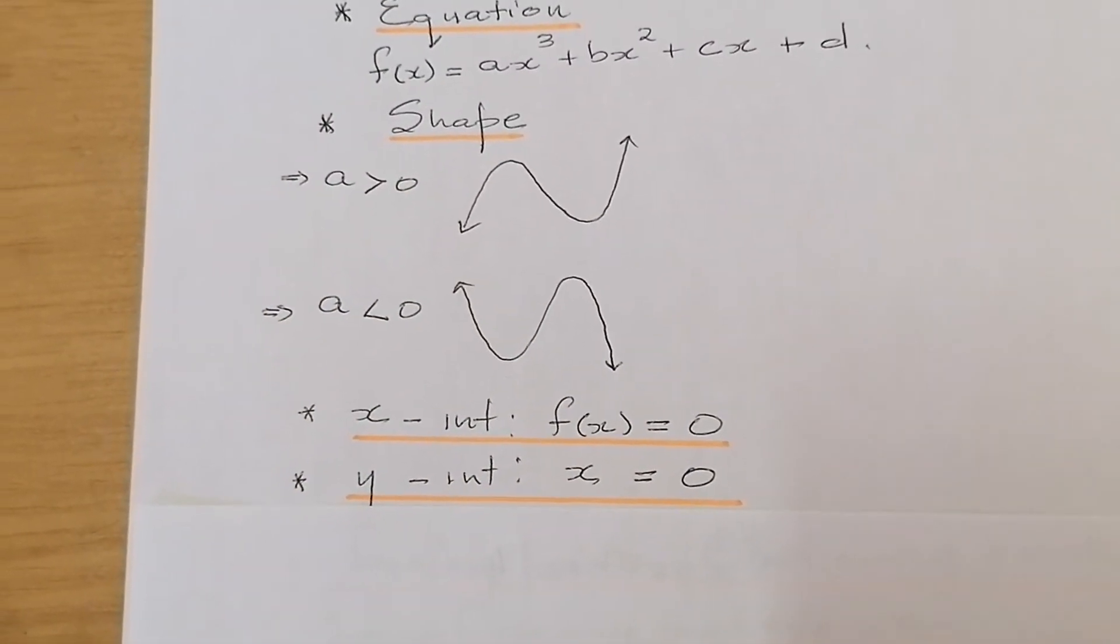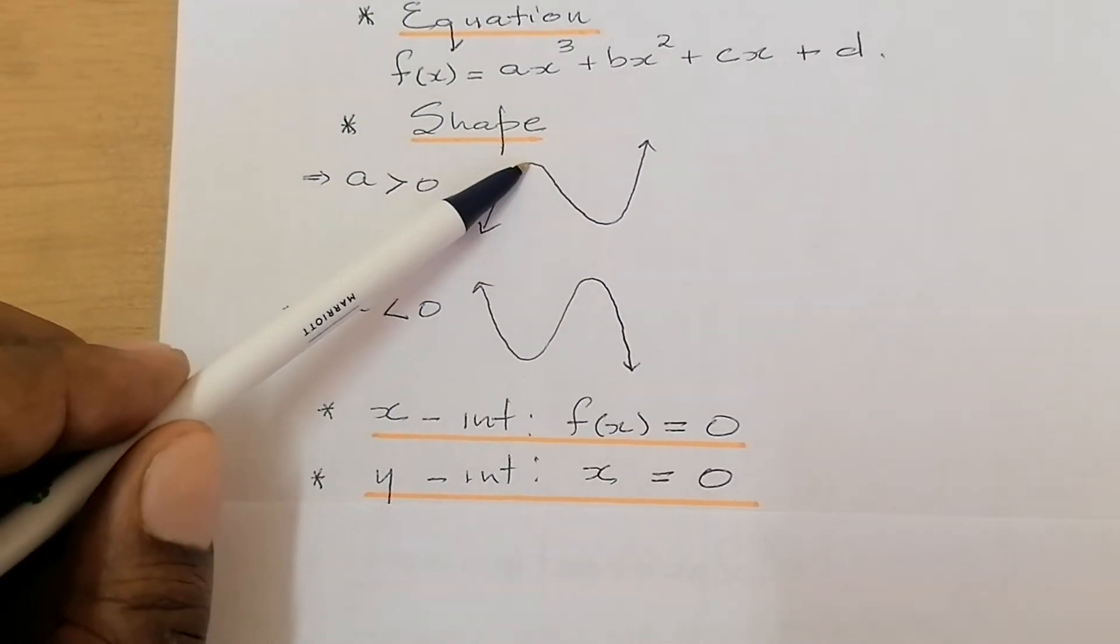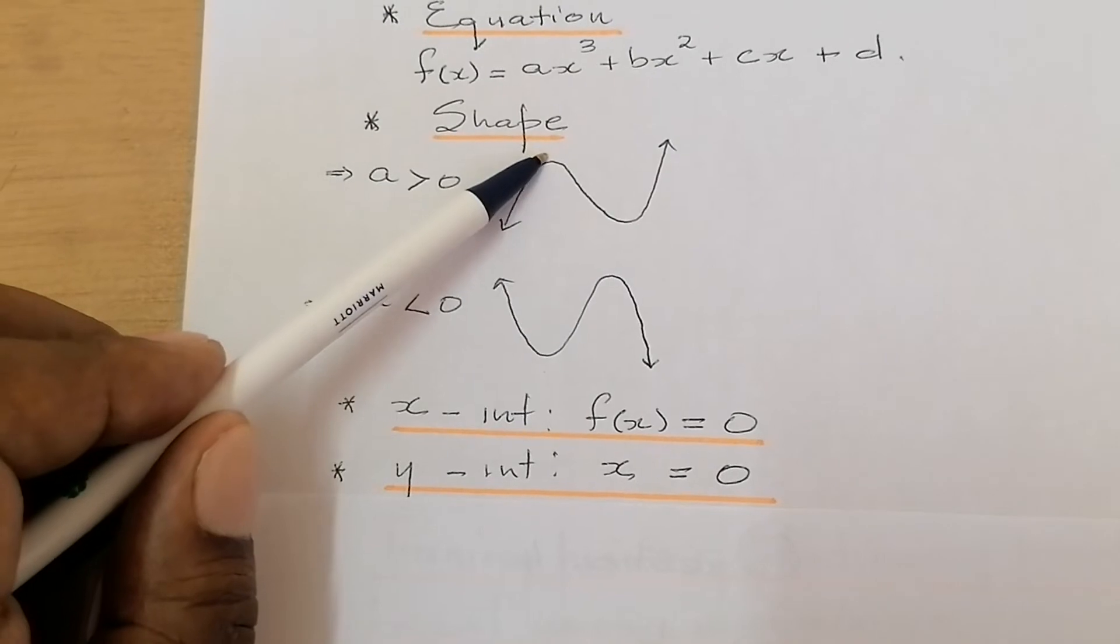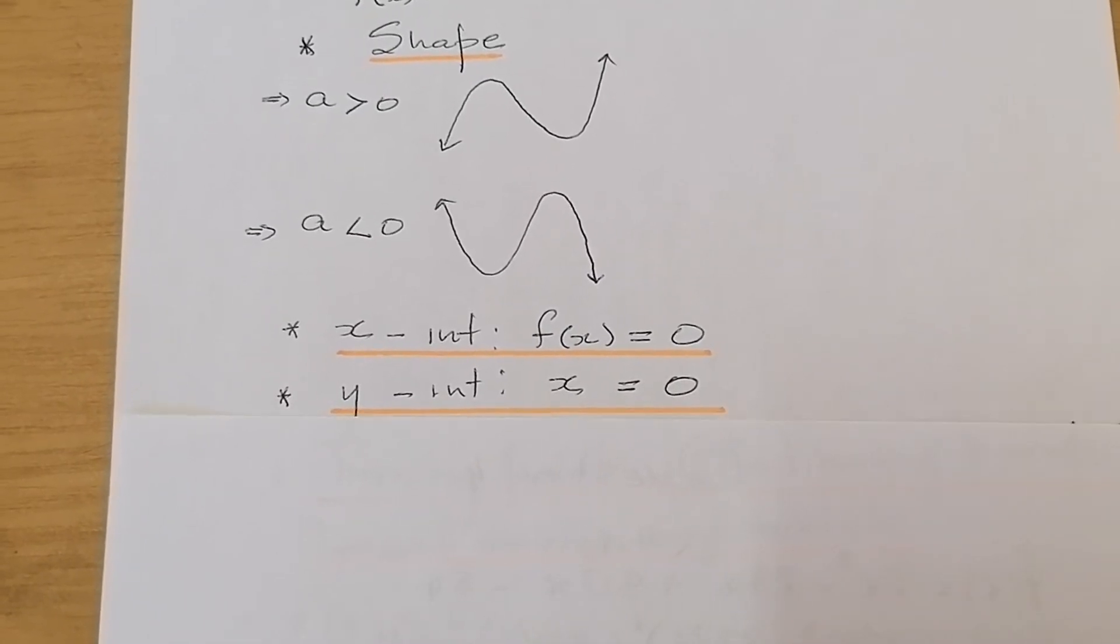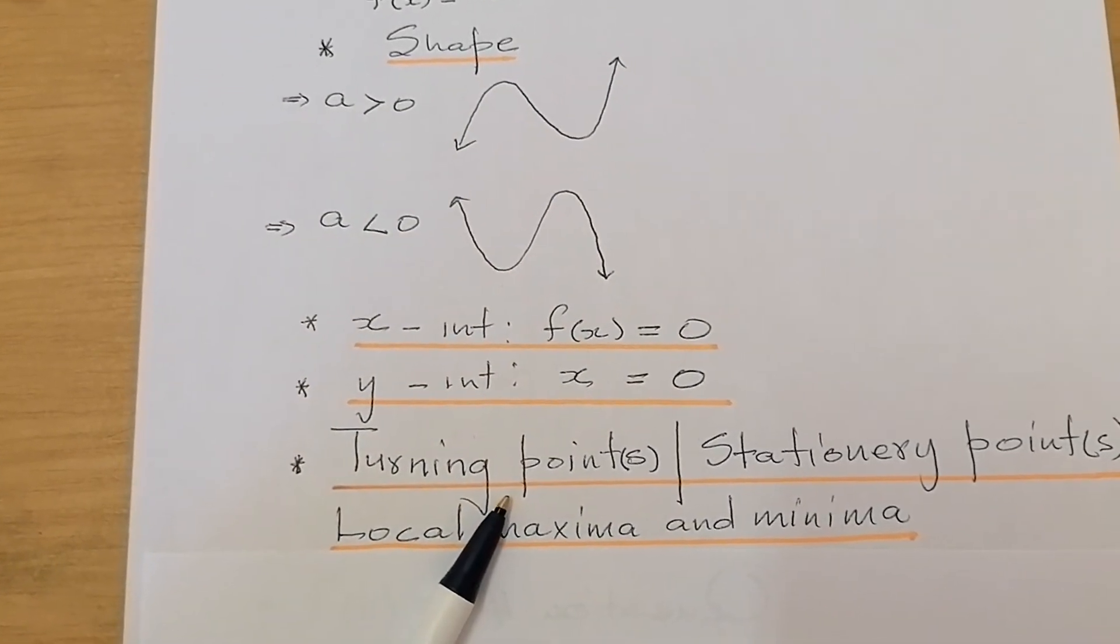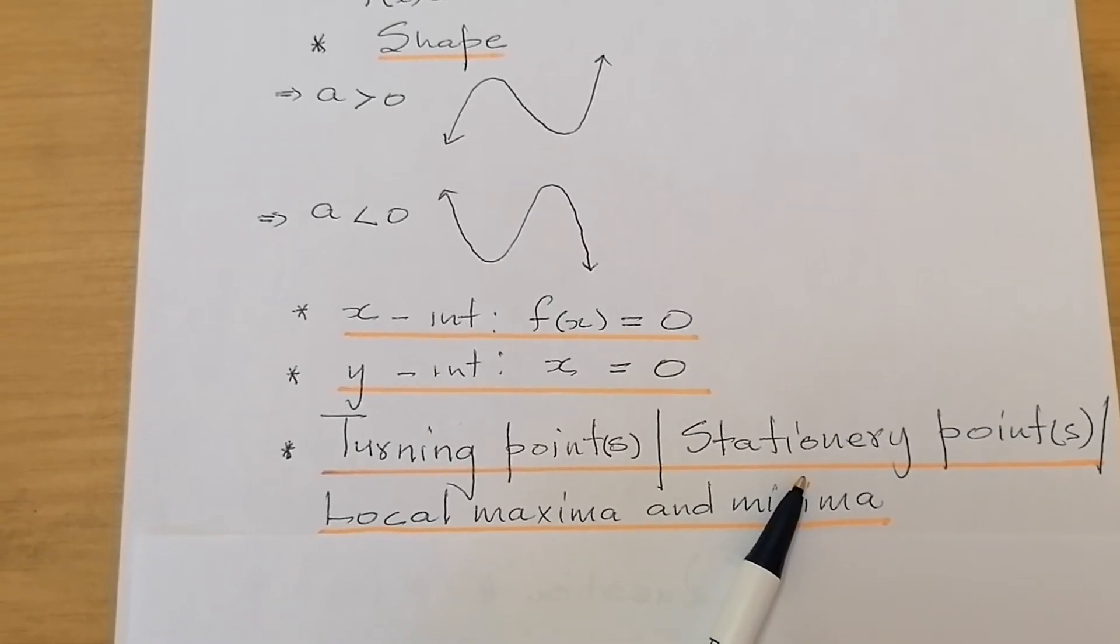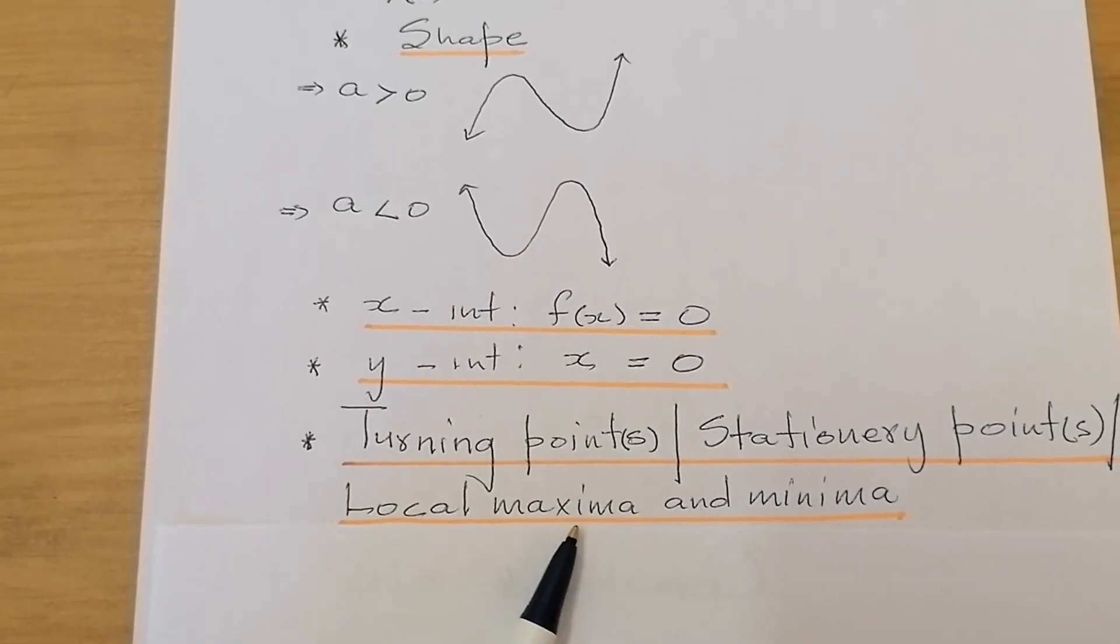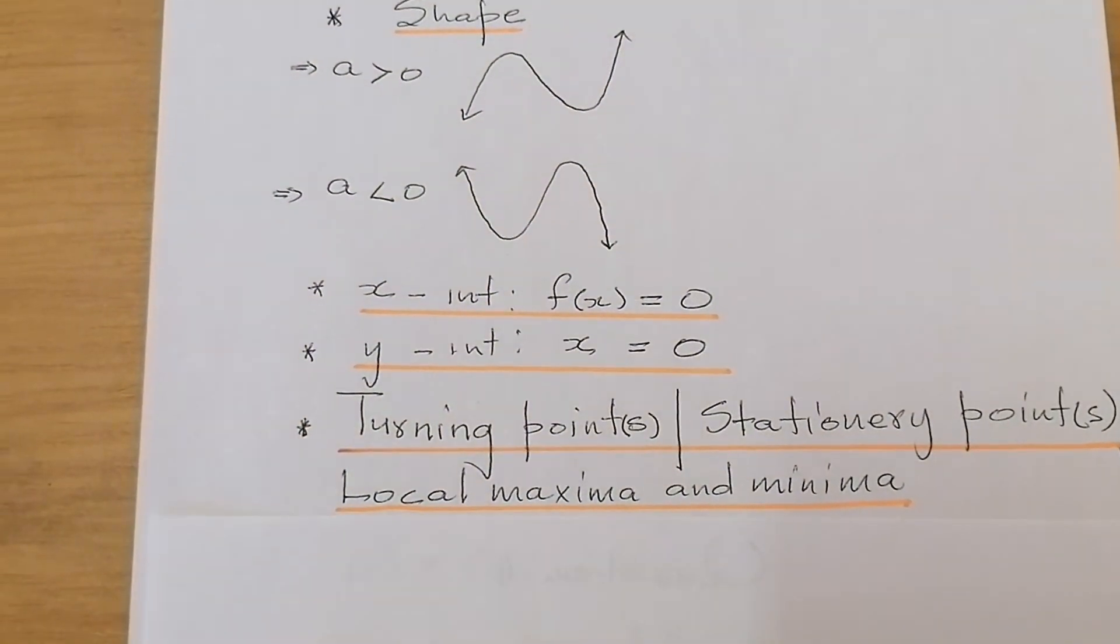From the x and the y-intercept, what is it that we need to know again? We need to know the coordinates of these two points. And we refer to those two points in calculus as turning points. We can also refer to them as stationary points. We can also refer to them as local maxima and local minima. Be very careful about that, folks.